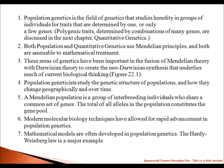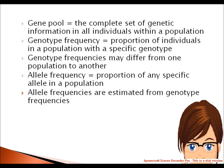Modern molecular biology techniques have allowed rapid advancement in population genetics. Mathematical models are often developed in population genetics — the Hardy-Weinberg law is a major example. Some key terms in population genetics: gene pool — the complete set of genetic information in all individuals within a population; genotype frequency — the proportion of individuals in a population with a specific genotype, which may differ from one population to another; allele frequency — the proportion of any specific allele in a population, estimated from genotype frequencies.